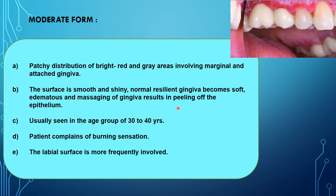The moderate form appears as a patchy distribution of bright red and gray areas involving marginal and attached gingiva. The surface is smooth and shiny. Normal resilient gingiva becomes soft and erythematous, and massaging of the gingiva will result in peeling of the epithelium. It is usually seen in the age group of 30 to 40 years, the patient complains of burning sensation, and the labial surface is more frequently involved.